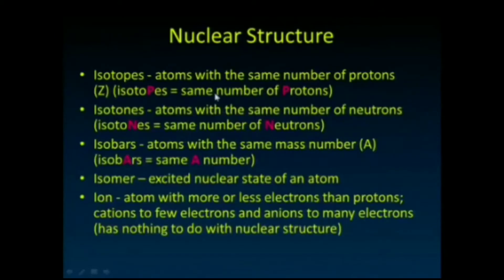So let's talk about some nuclear structure and get some terms correct. First, we're going to talk about isotopes—atoms with the same number of protons. They're all going to be, let's say, oxygen atoms, just with varying numbers of neutrons but all with the same number of protons. It's the number of protons that defines what element the atom is.